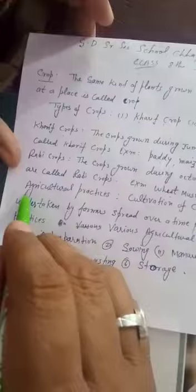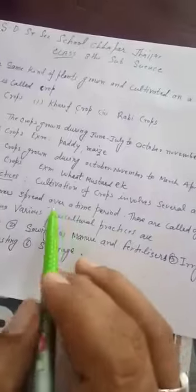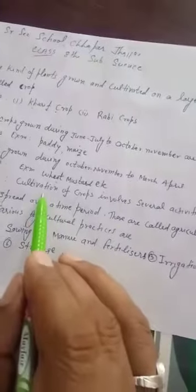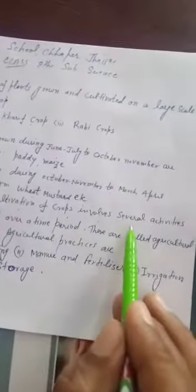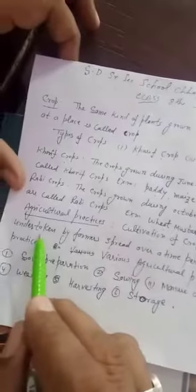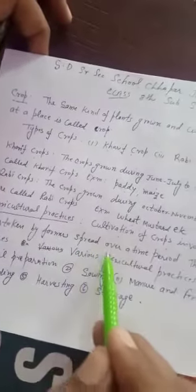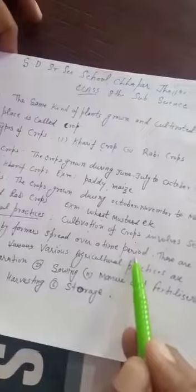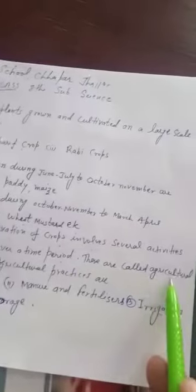Now we discuss agricultural practices. Cultivation of crops involves several activities undertaken by farmers spread over time periods. These are called agricultural practices.